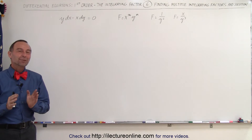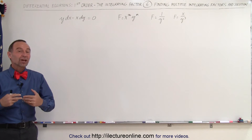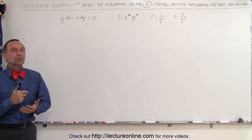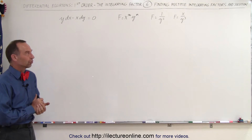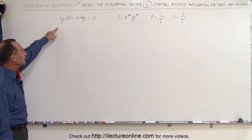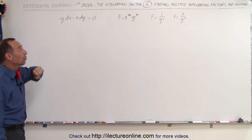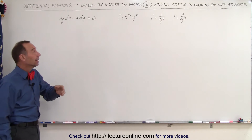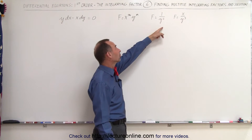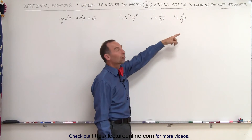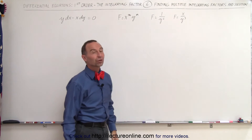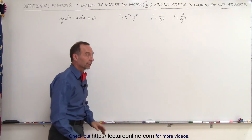Welcome to Electroline. In the previous video we saw that there can be multiple integrating factors. In this particular case with the equation y dx minus x dy, we found that some of the integrating factors could be 1 over y squared, x over y cubed, and of course there's an infinite number in this particular case.